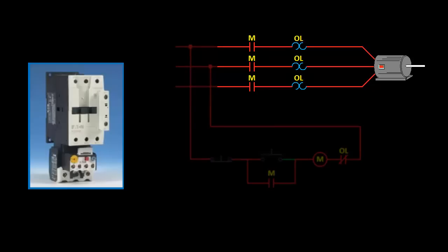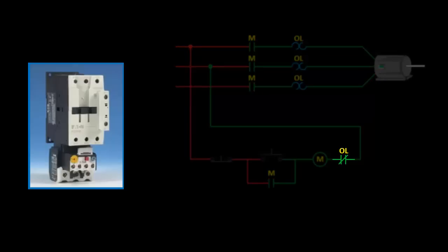The higher the current, the hotter the heating element is going to get. Once it reaches a certain temperature, it is designed to trip, opening up the normally closed contact, de-energizing the contactor coil, and opening up the contacts in the power circuit and shutting off the motor.